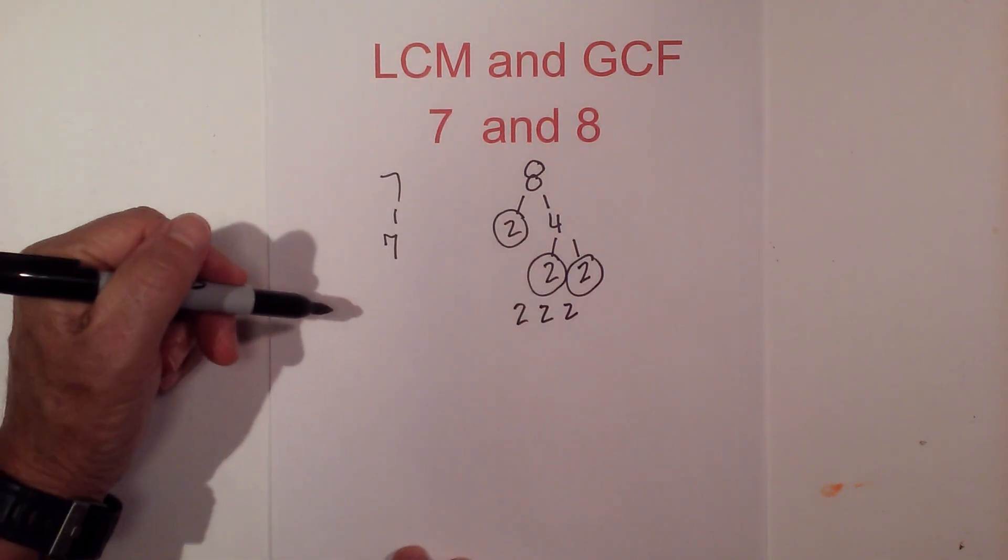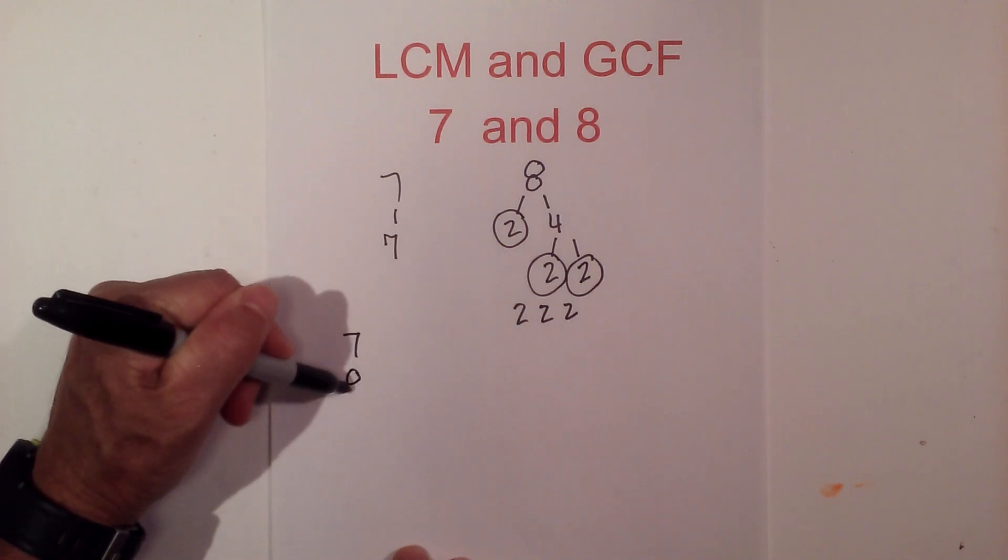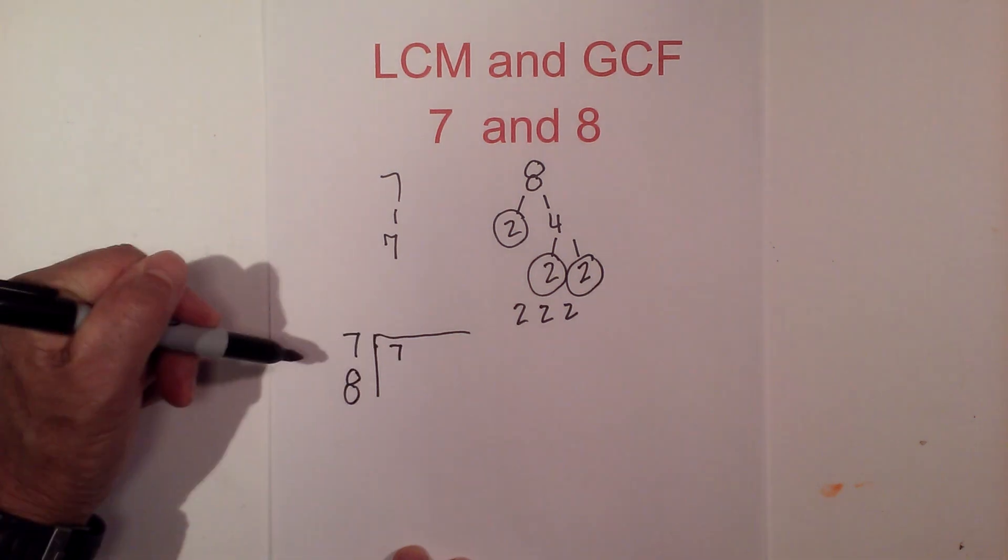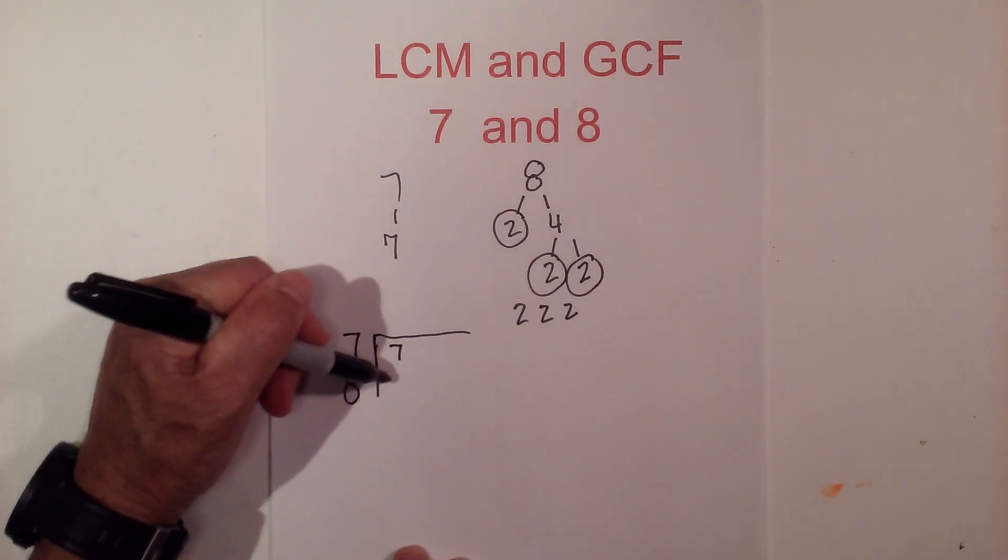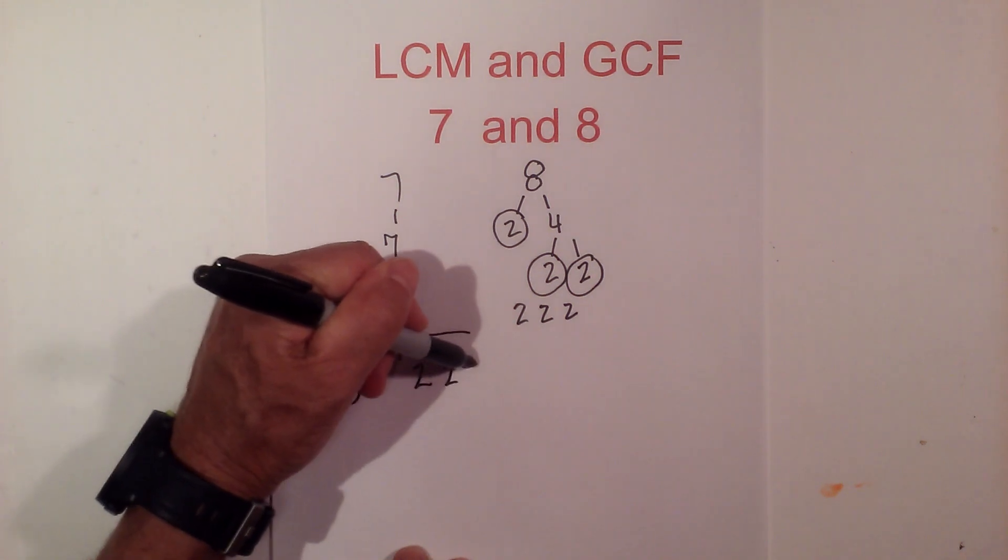So now what I'm going to do is draw a little factor chart for 7 and 8. I'll write a 7 here. I'll skip a space with the 8 because I don't have a 7, and there's a 2, a 2, a 2.